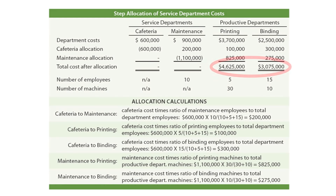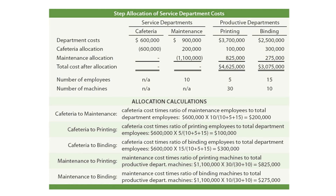Once we get through making this allocation, we come up with $4,625,000 of total cost to printing and $3,075,000 to binding. The lower portion of this slide shows the calculations for each of those allocations. This is in your textbook — you might want to look closer at that and test the mathematics to be sure you understand the process that's being followed.